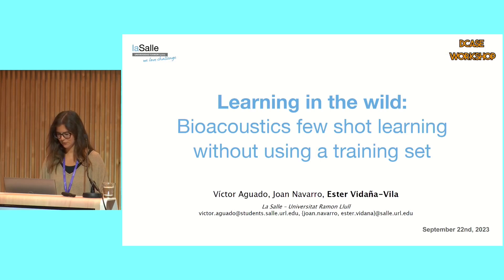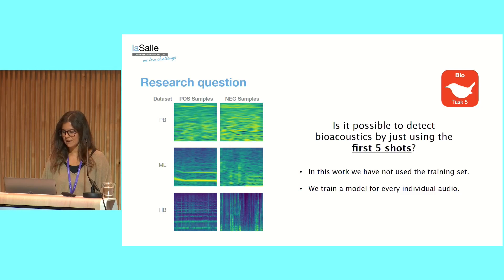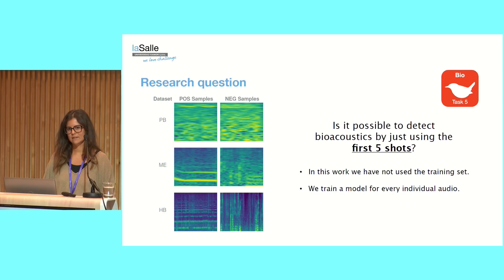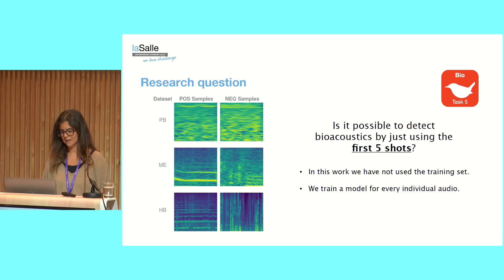This project was developed in the context of Task 5 of DCASE, the few-shot bioacoustic task. In this task, participants are given a training set with audio from different species of animals, and then a validation and testing set. We were wondering if it is actually necessary to use a training set, or if we could obtain comparable results just by using the species in the validation or testing set. We only used the validation set as it contained full annotations; for the testing set, annotations are not publicly available.